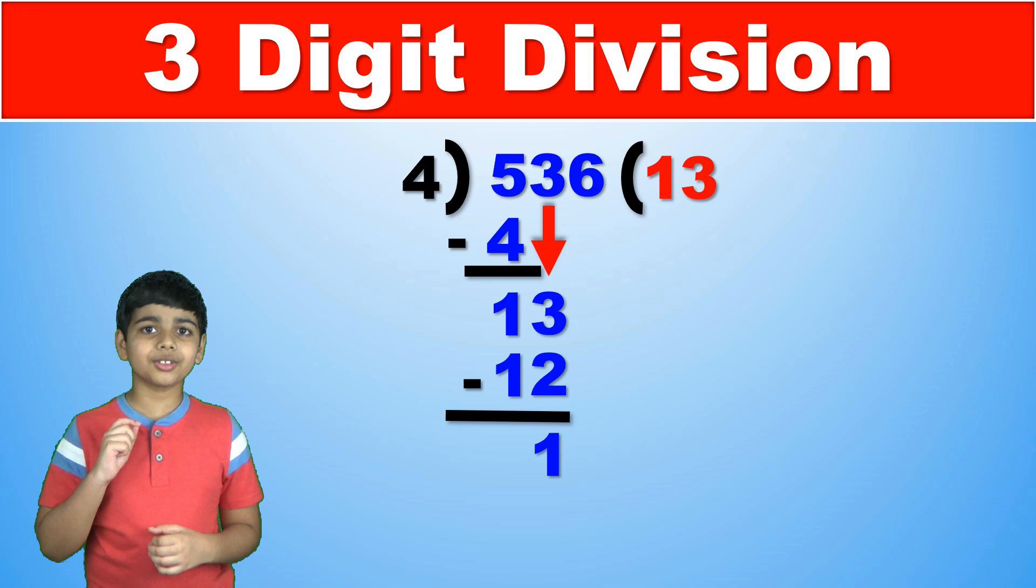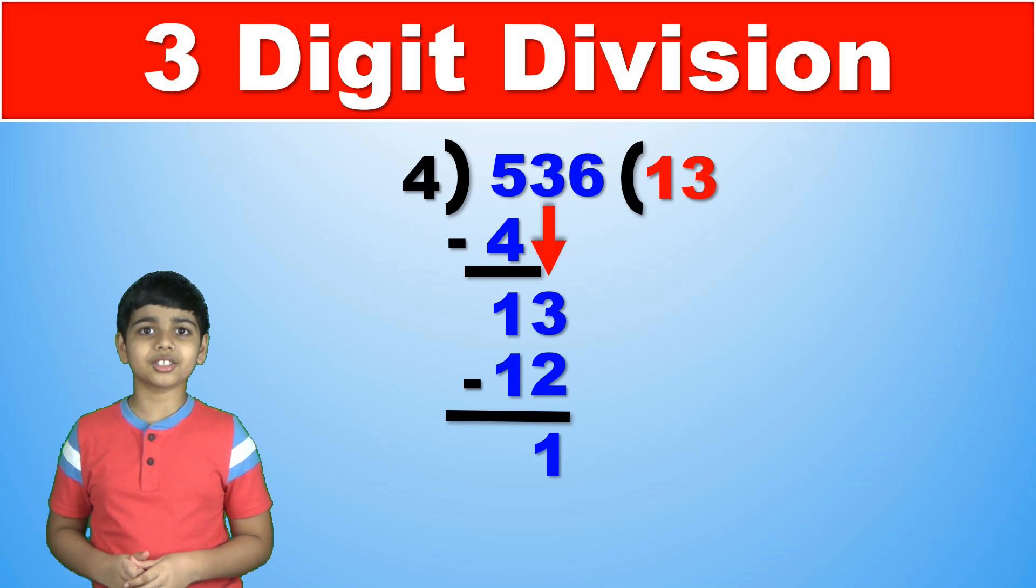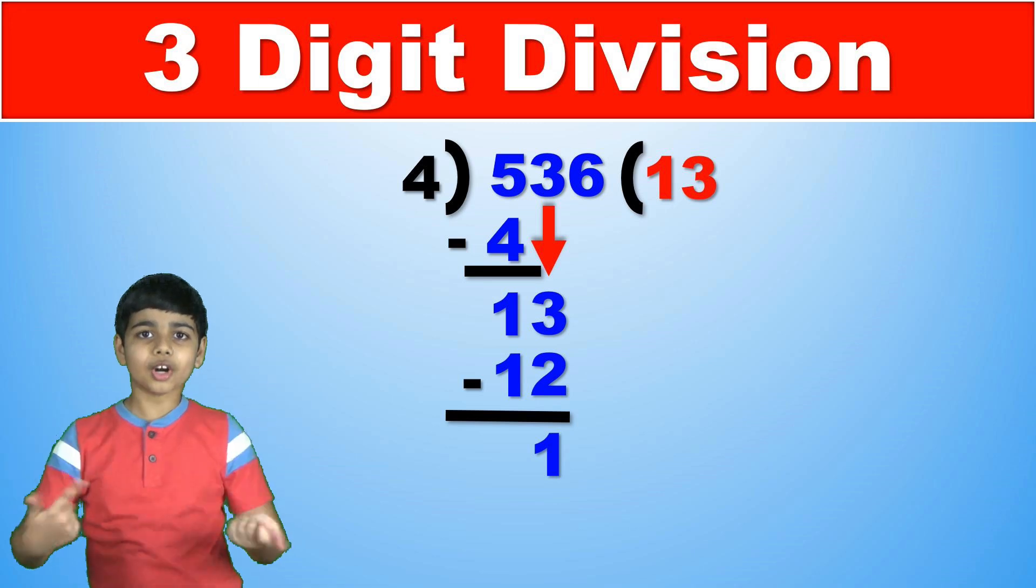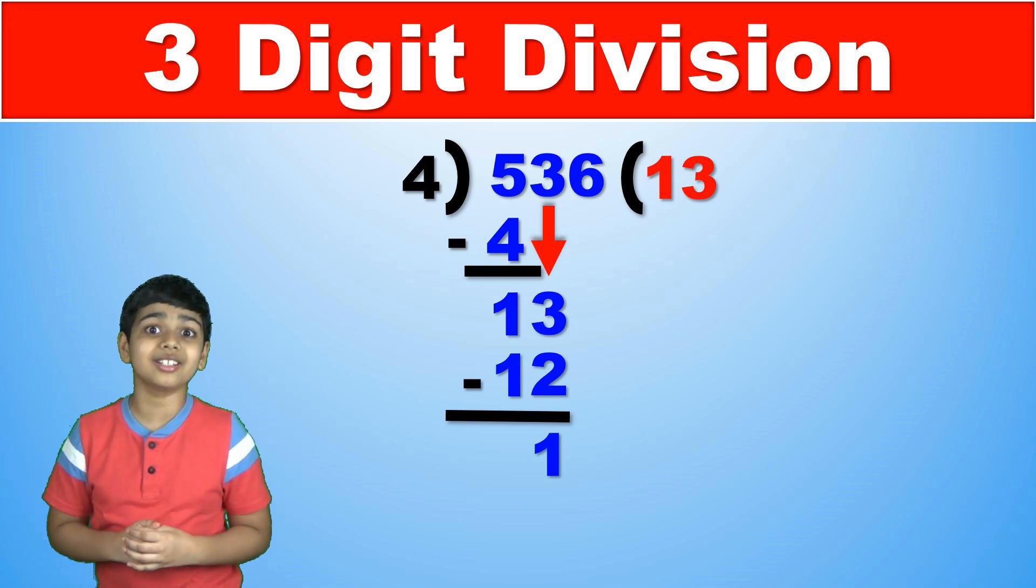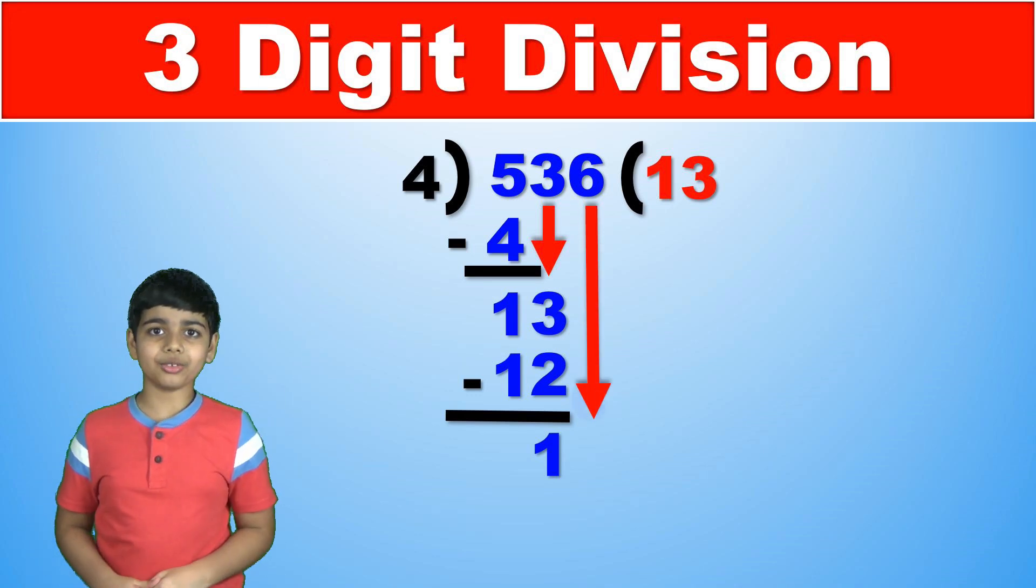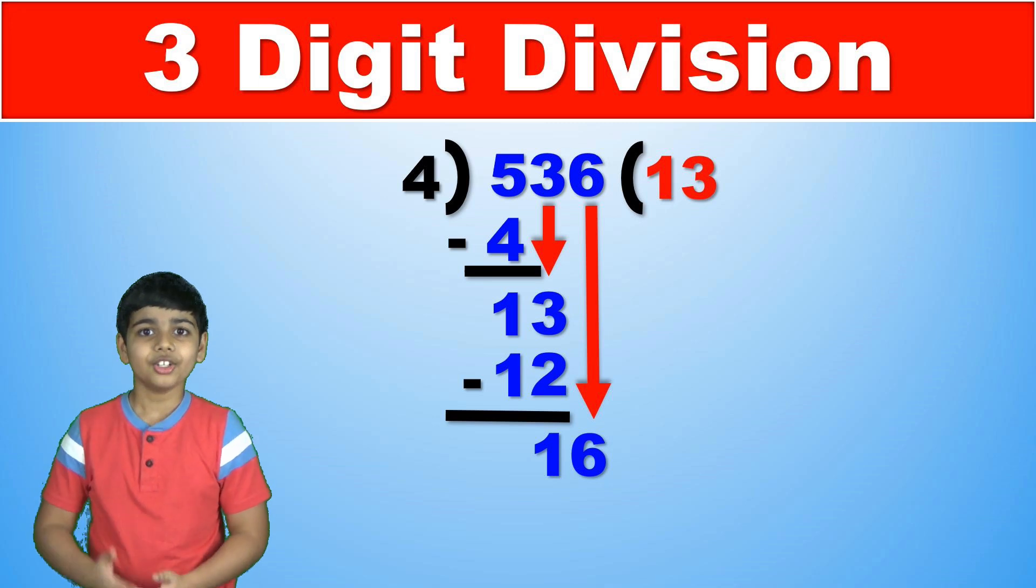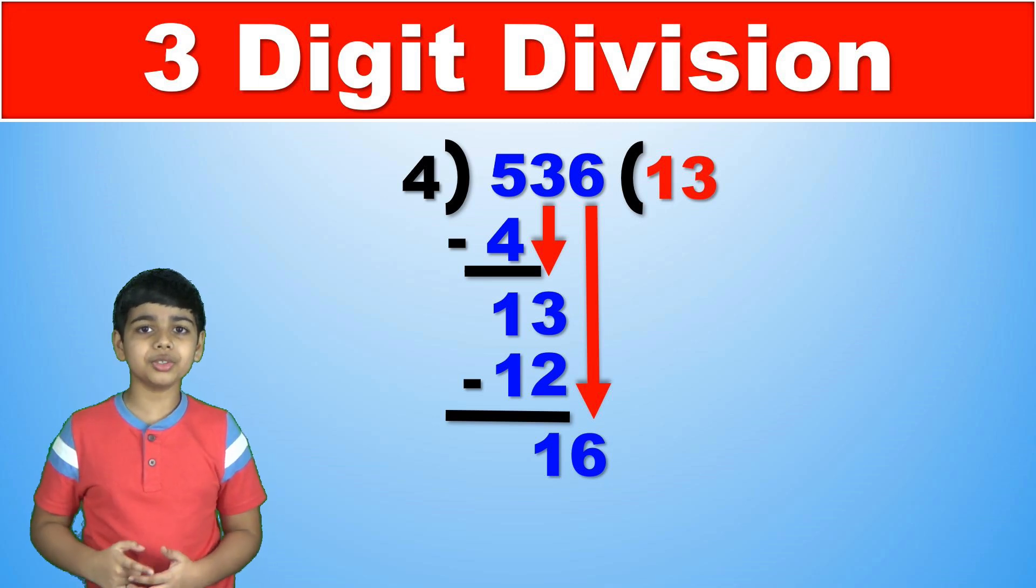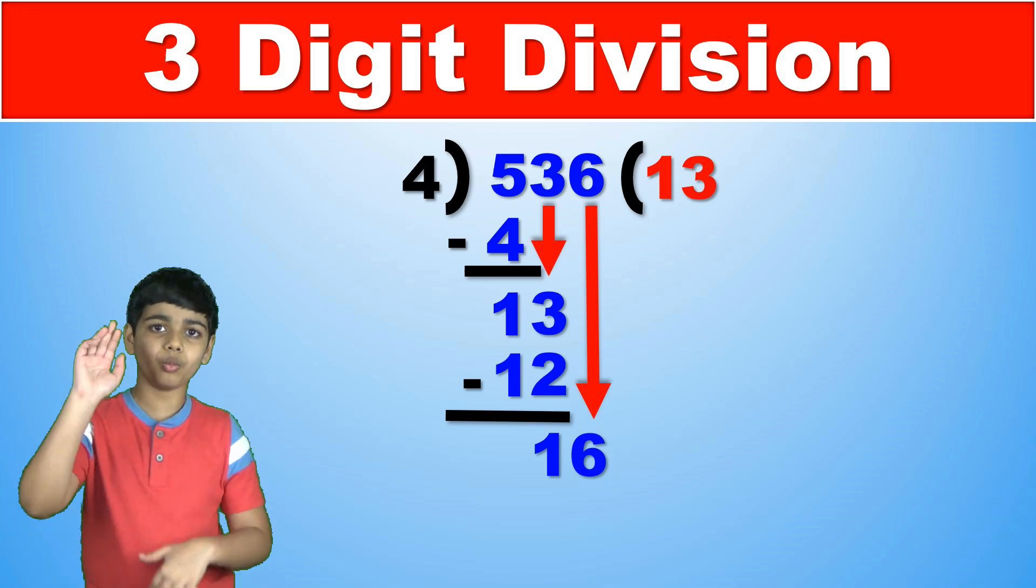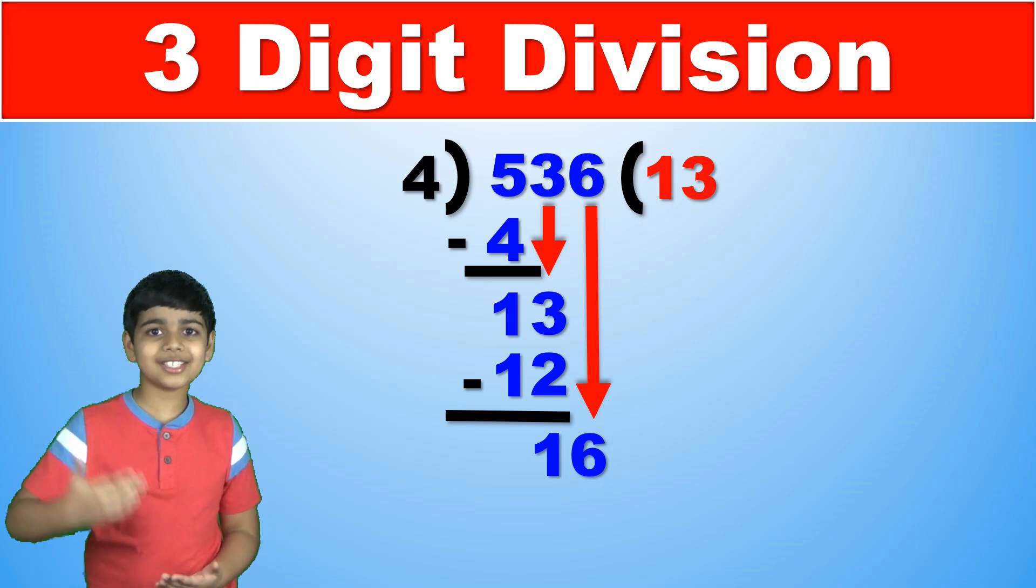And now we drop down the next digit in the original dividend which is 6. So we drop that down and now we have 16. So now we can repeat the cycle again one more time. So is 16 greater than 4? Obviously yes.